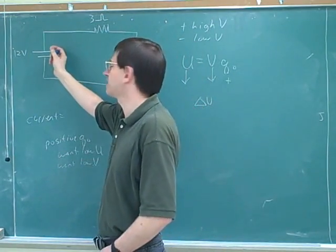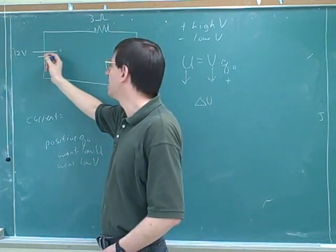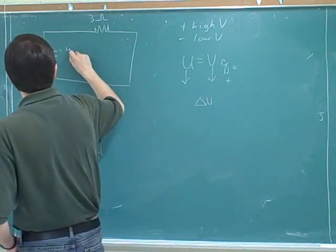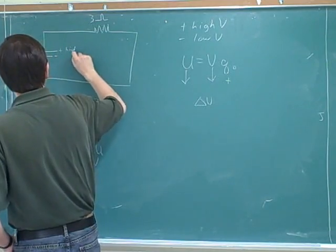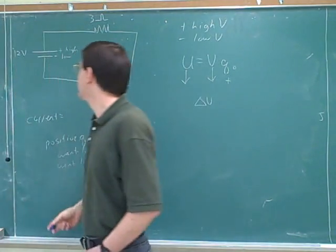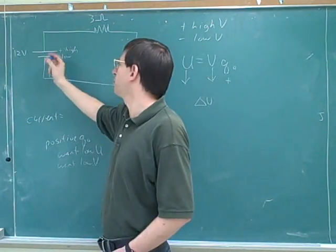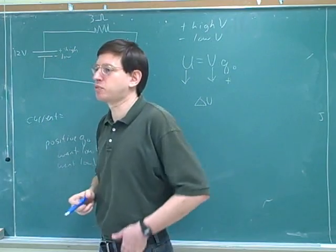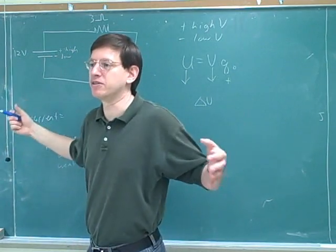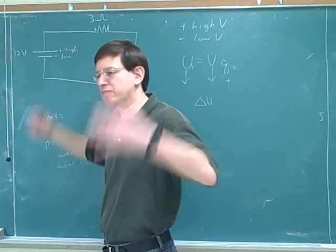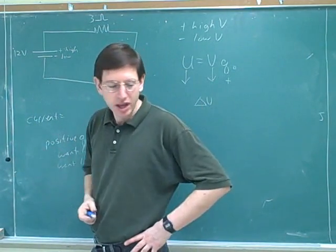Because remember, positive here really represents high potential, and negative represents low potential. You can just use our analogy — this represents a high point, and this represents a low point. Things want to move lower if you use the gravitational analogy. Things want to move from high to low.